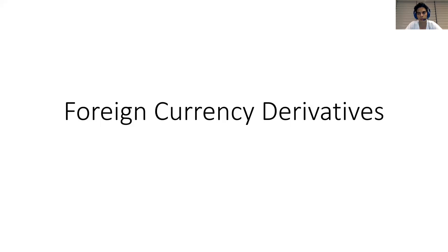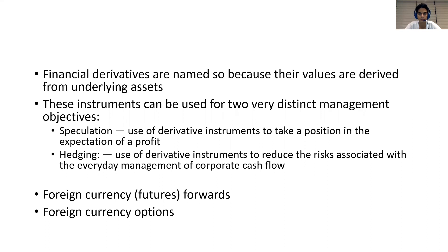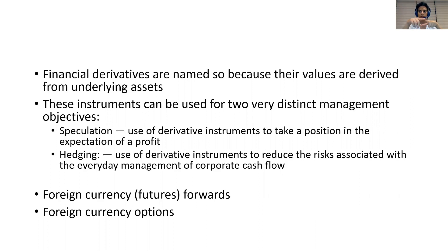This is presentation number six — you have it in Blackboard as with all the presentations. The name 'derivative' is called that because the value of the derivative, which is physically a contract where people specify things they will do in the future, is based on the value of another asset. That's why it's called a derivative — because its value derives from the value of another asset. The paper itself is not worth anything on its own.